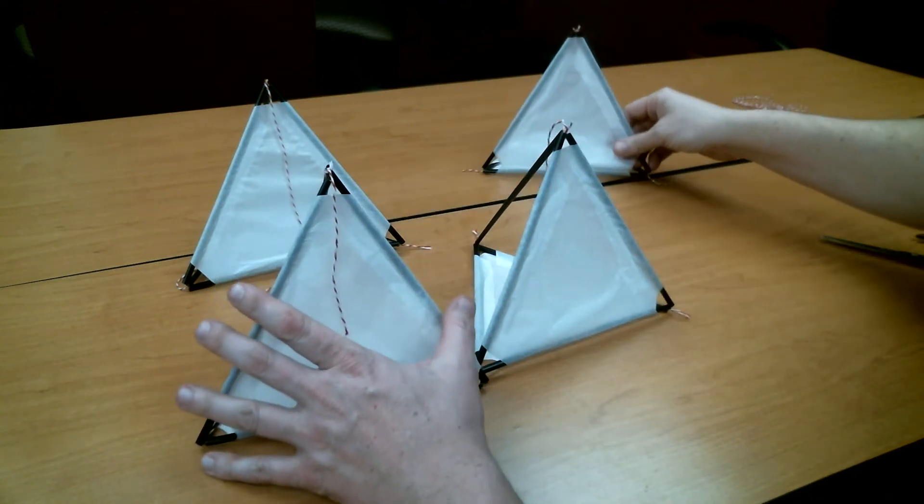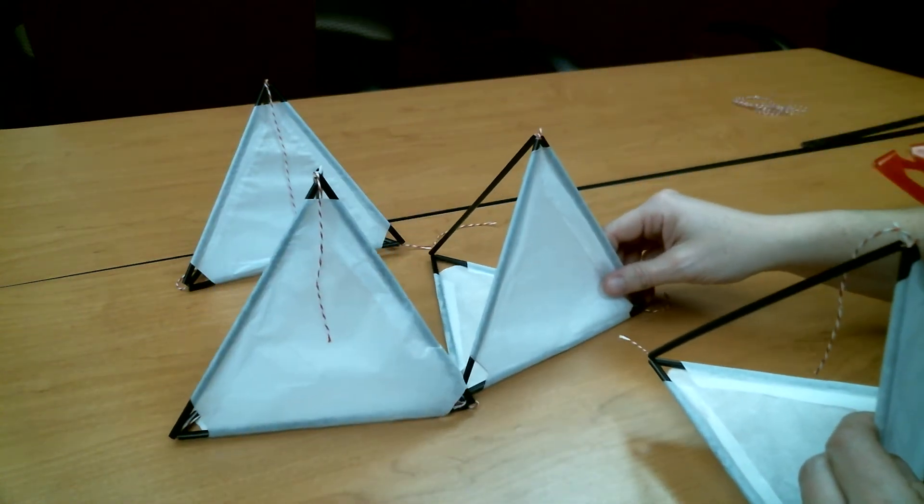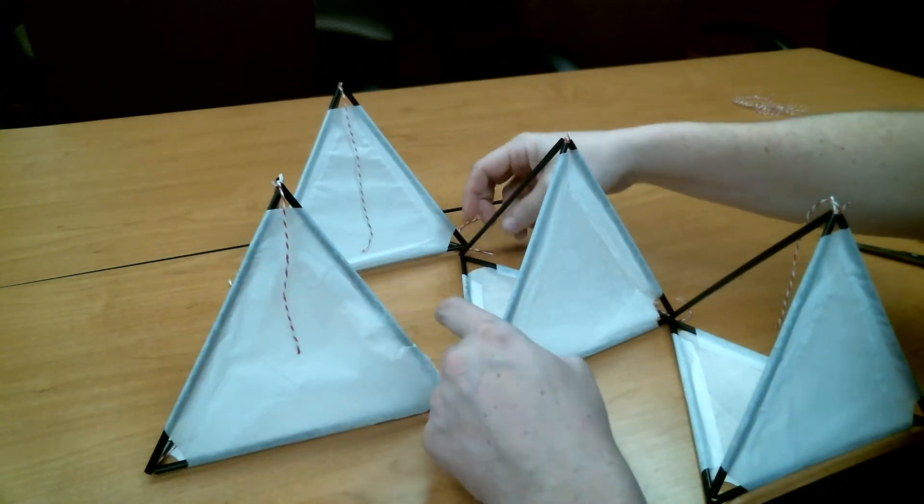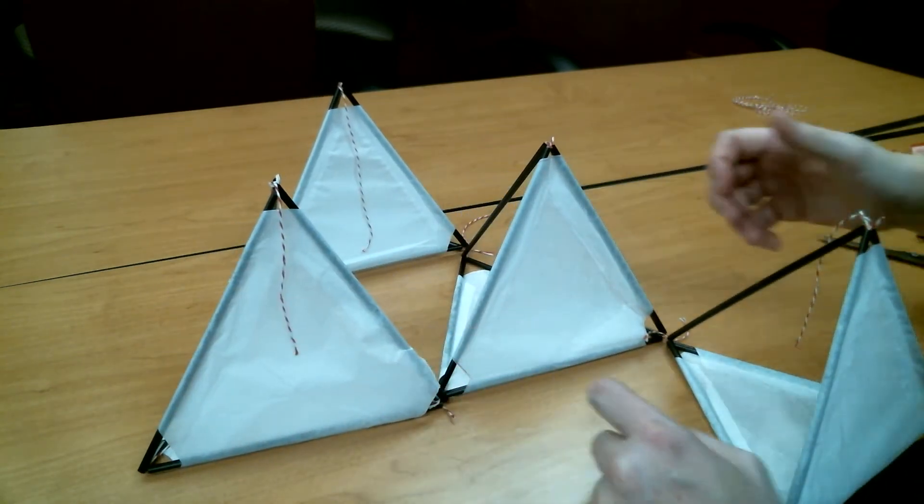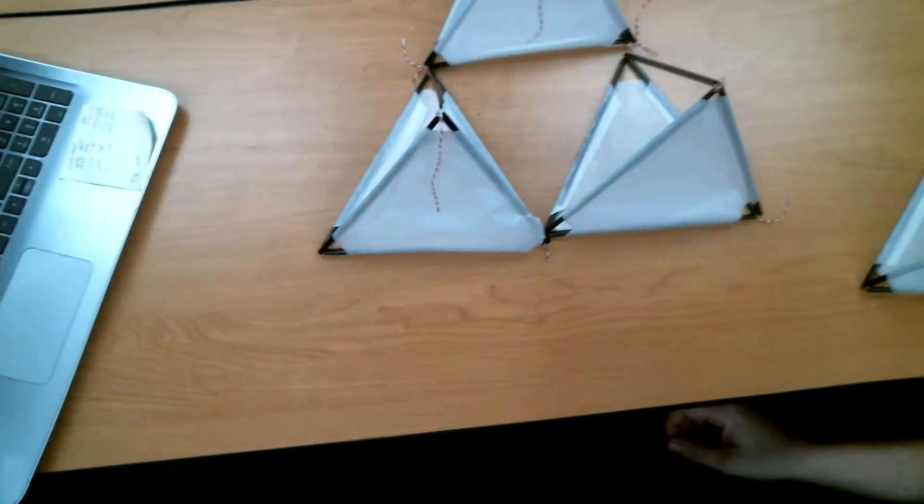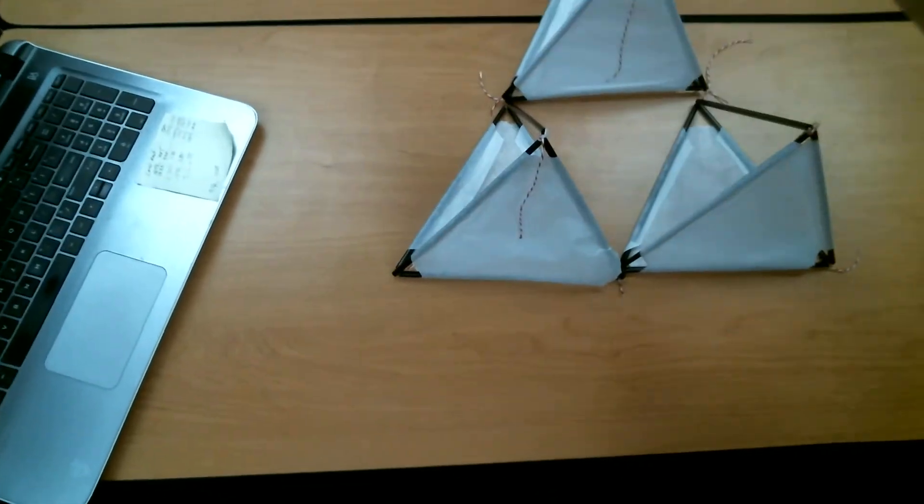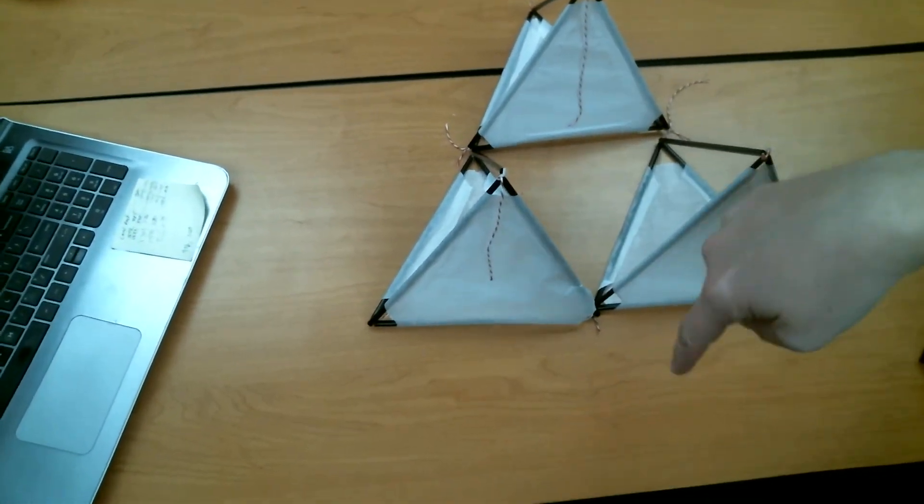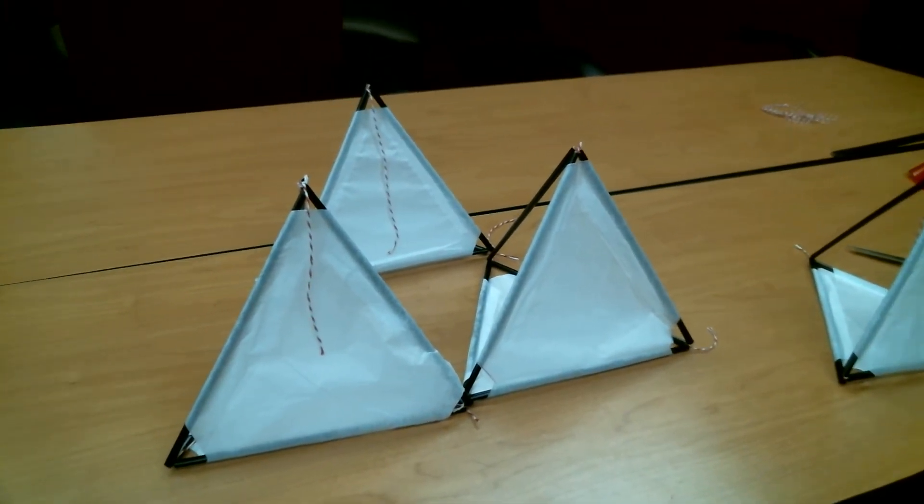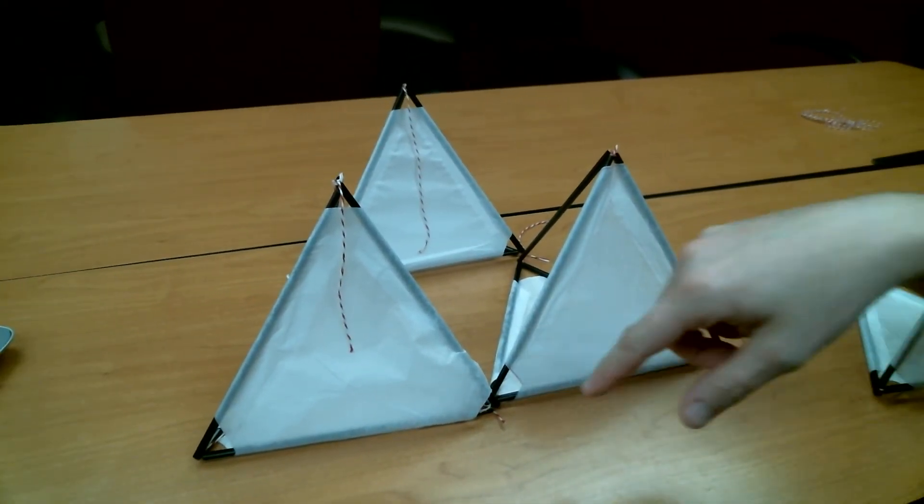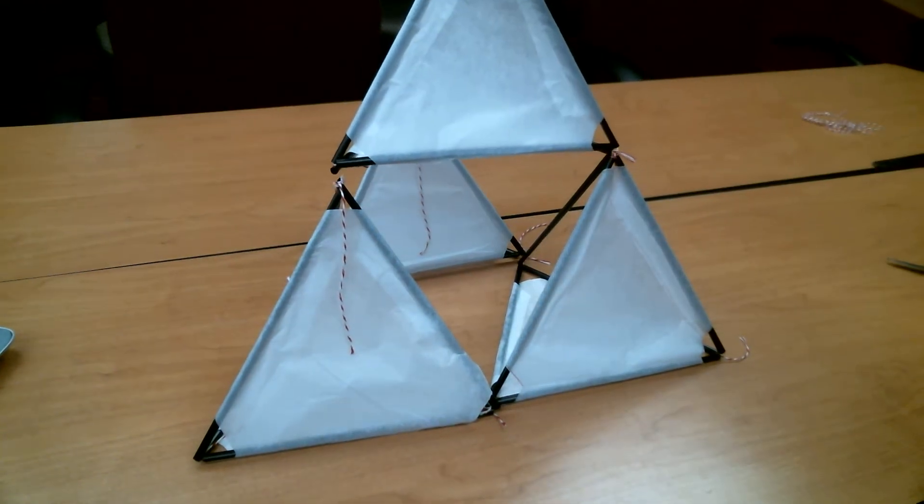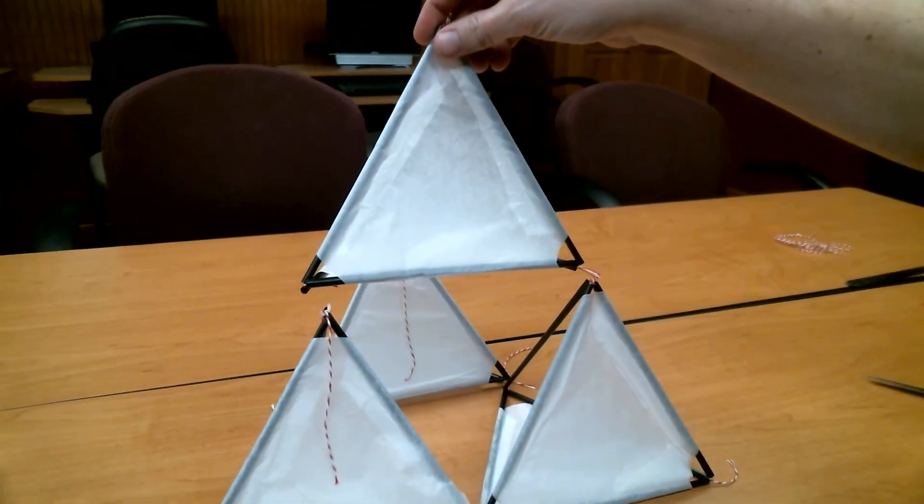What you're going to want is an arrangement that's something like this. Let me disconnect the camera here quick and give you a bird's eye view. Looking down from the top, it's going to be a triangle of the three tetrahedrons. Once we get these all connected, we'll put our fourth one on top like this and that'll give you your full kite.